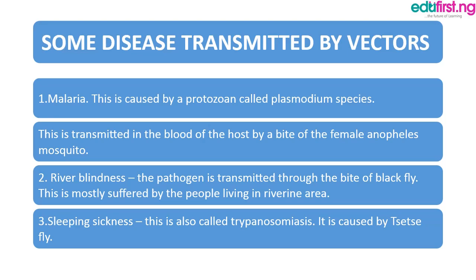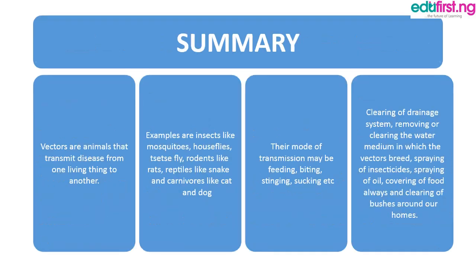Some diseases transmitted by vectors include: malaria, the most common, caused by a protozoan called Plasmodium species, transmitted in the blood of the host through the bites of the female Anopheles mosquito. River blindness, suffered mostly by people living in riverine areas, is transmitted through the bites of the black fly. Sleeping sickness, also called trypanosomiasis, is transmitted in the blood of the host through the bites of the tsetse fly.